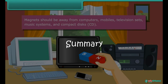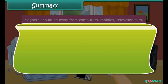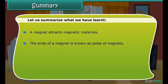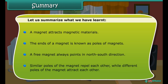Summary. Let us summarize what we have learned: a magnet attracts magnetic materials; the ends of a magnet are known as poles; a free magnet always points in a north-south direction; similar poles of a magnet repel each other, while different poles of a magnet attract each other.